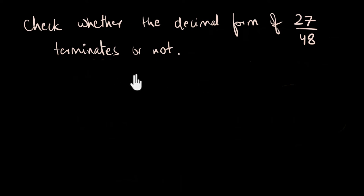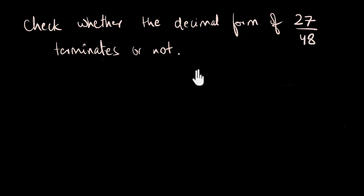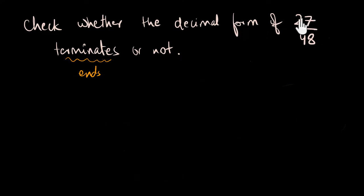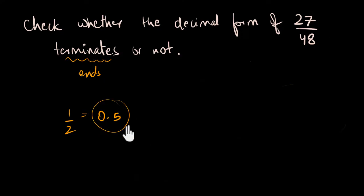Here's a typical one-mark exam-style question: check whether the decimal form of 27 by 48 terminates or not. Let me simplify the question first. We're given a fraction and we want to talk about its decimal form. 'Terminates' simply means 'ends,' so we want to find whether the decimal form looks something like 0.5 — which ends — or something like 0.3333... which goes on forever.